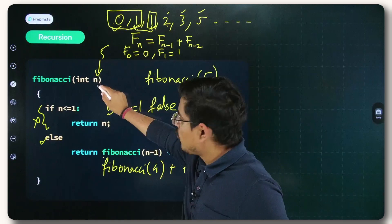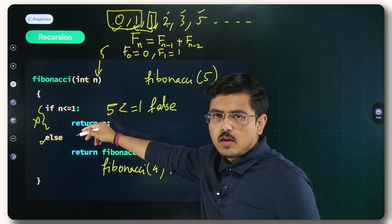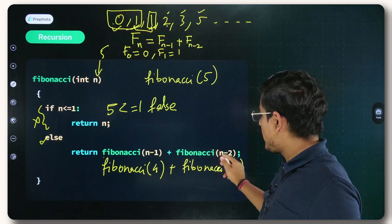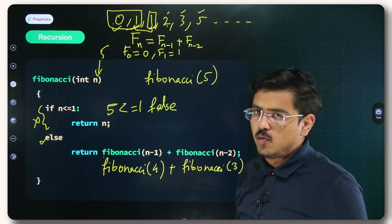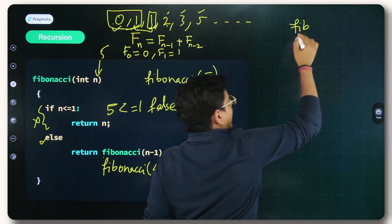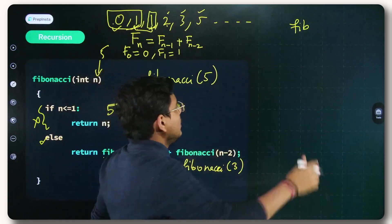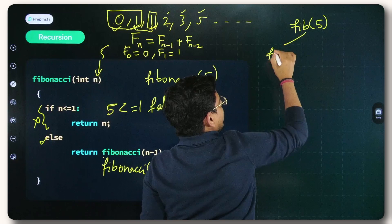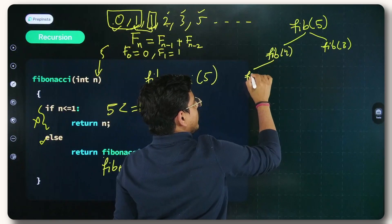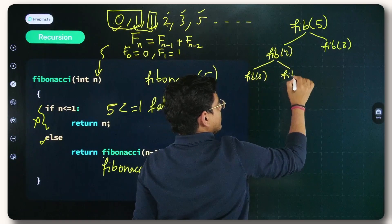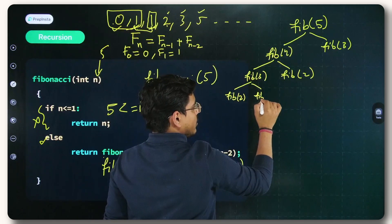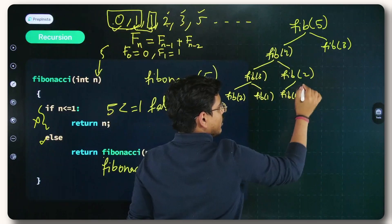For Fibonacci(4), since 4 is not less than or equal to 1, we again go to the else block. Fib(4) becomes Fib(3) plus Fib(2). I'll call Fibonacci 'Fib' for short. So Fib(5) leads to Fib(4) and Fib(3). Fib(4) leads to Fib(3) and Fib(2). Fib(3) leads to Fib(2) and Fib(1). Fib(2) leads to Fib(1) and Fib(0).